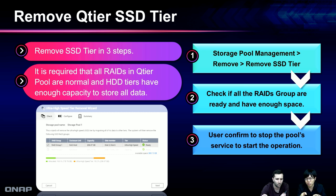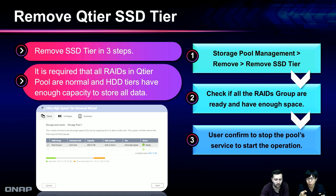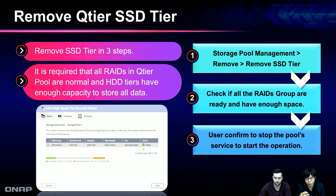Here's a simple demonstration in the UI. We can remove the SSD tier in three steps. First, open storage pool management and see the new option to remove the QTier SSD tier. Then the wizard checks if all arrays are in ready condition and the capacity tier has enough space to store SSD tier data. Finally, we confirm whether storage pool service can be paused temporarily, and we start the data migration. The operation starts immediately — just a few clicks and everything is done.